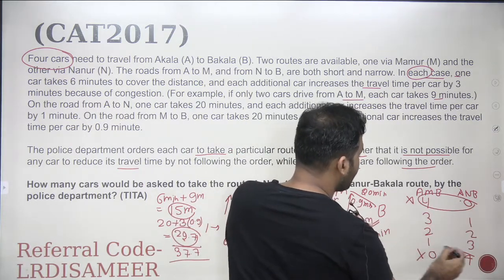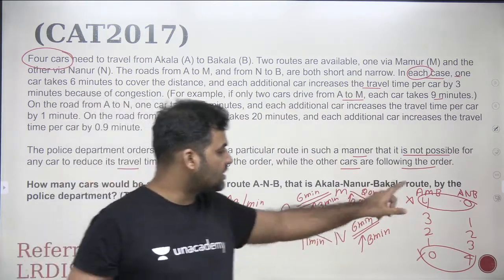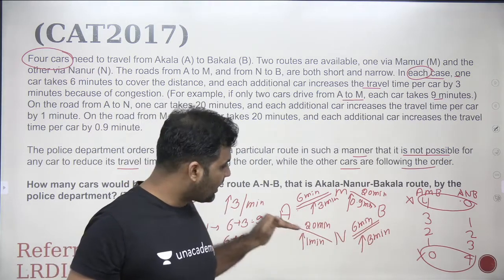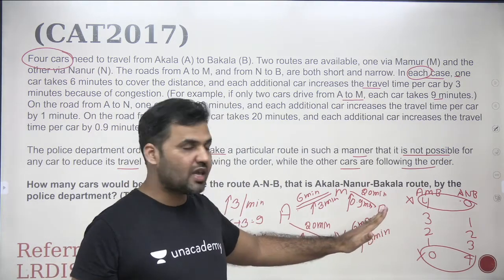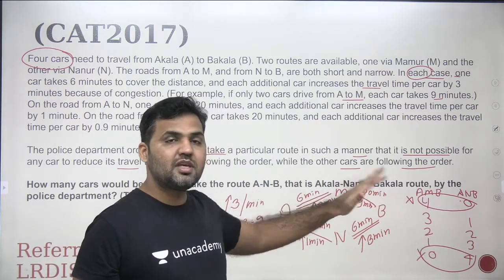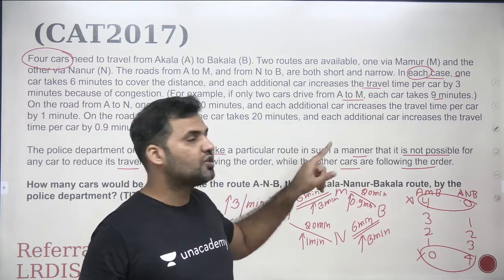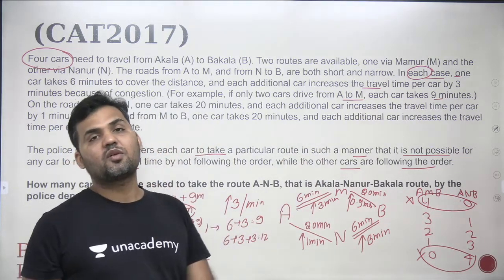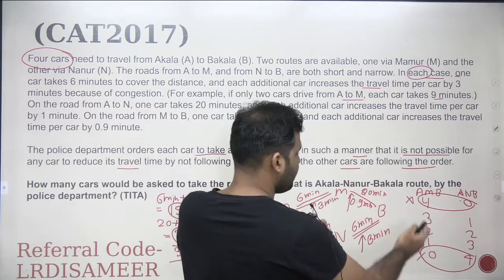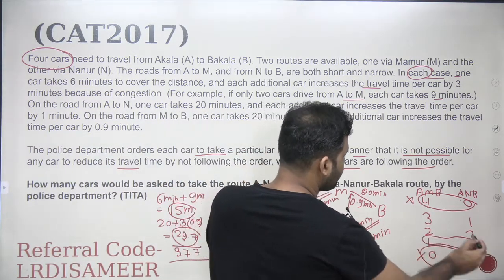Similarly, the (0,4) case is eliminated. If all cars use the A-N-B route and one car decides to switch to A-M-B, that car can reduce its travel time. Since the condition requires that no car can reduce its travel time by deviating, both (4,0) and (0,4) are ruled out.